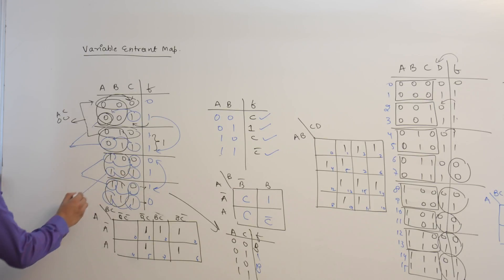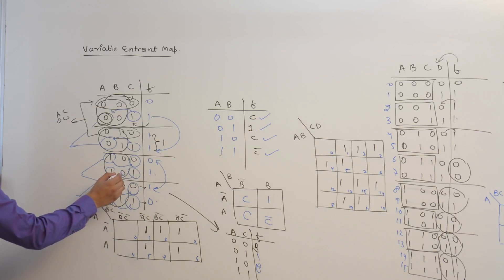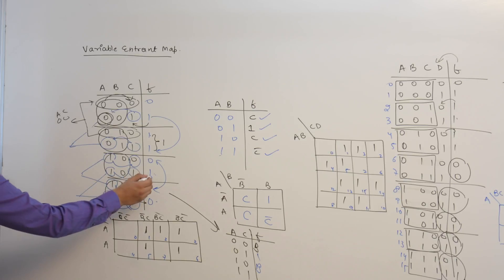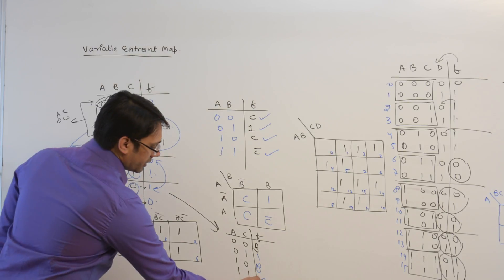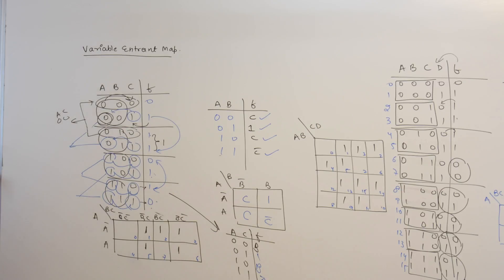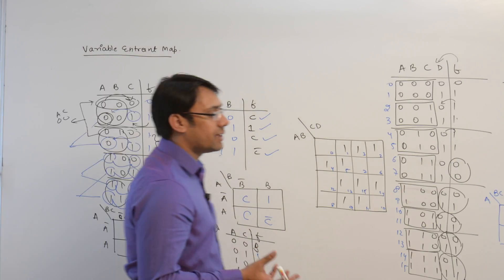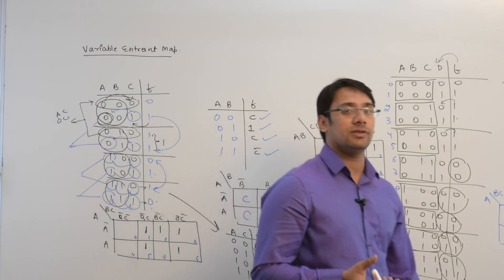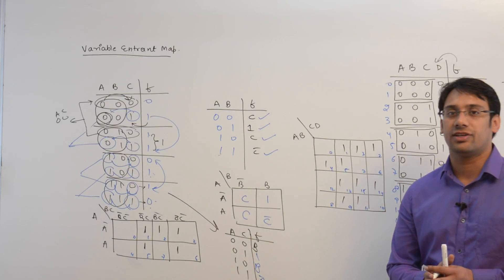When A is 1 and C is 1, the function F behaves as the complement of B — if B is 0 then F is 1, and if B is 1 then F is 0. So here we write B-complement. We can then make a Variable Entrant K-map from this table as well.